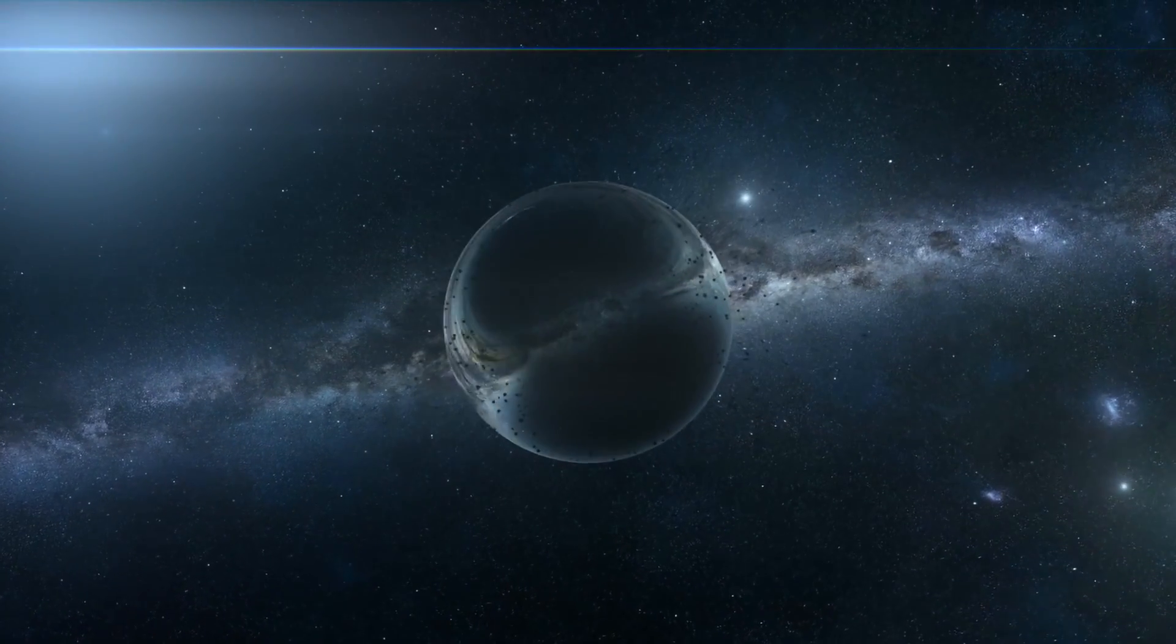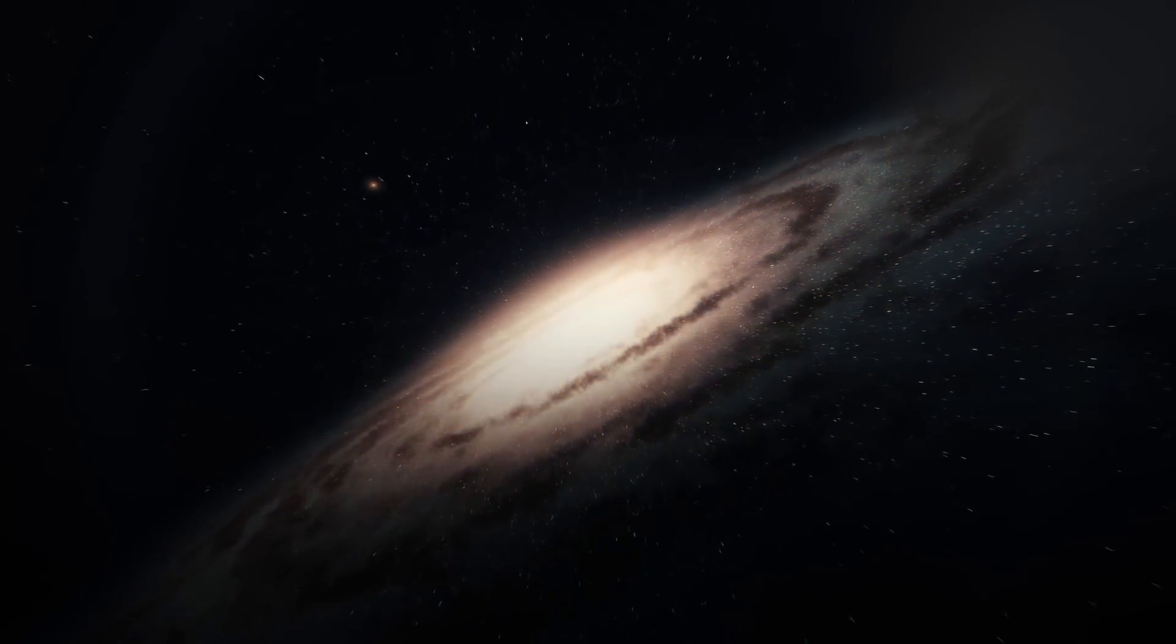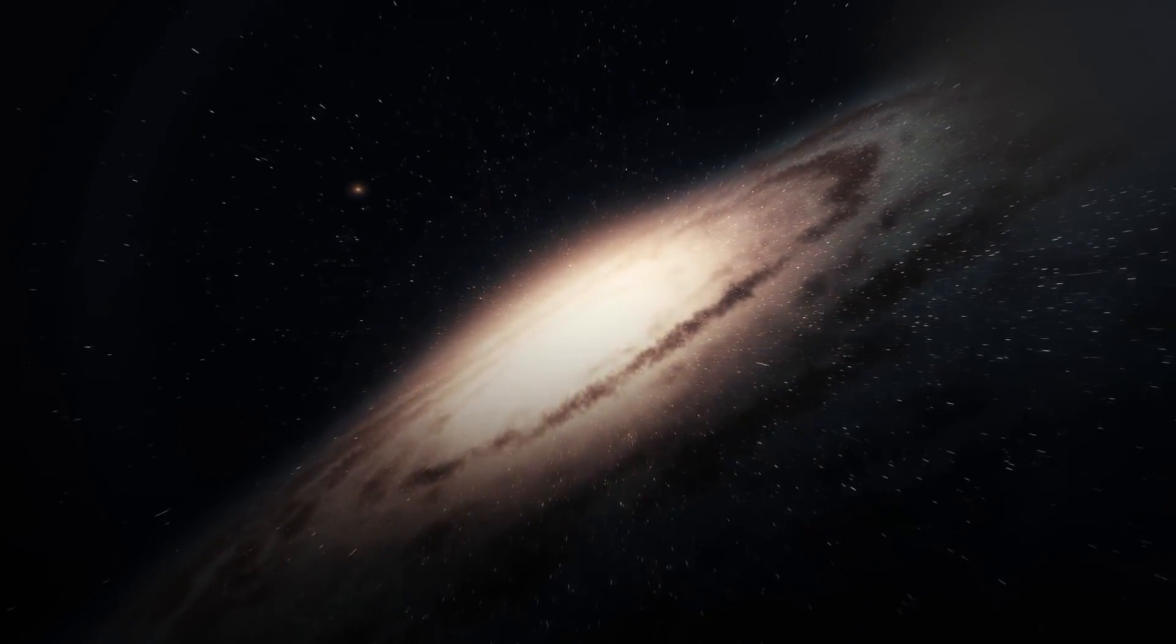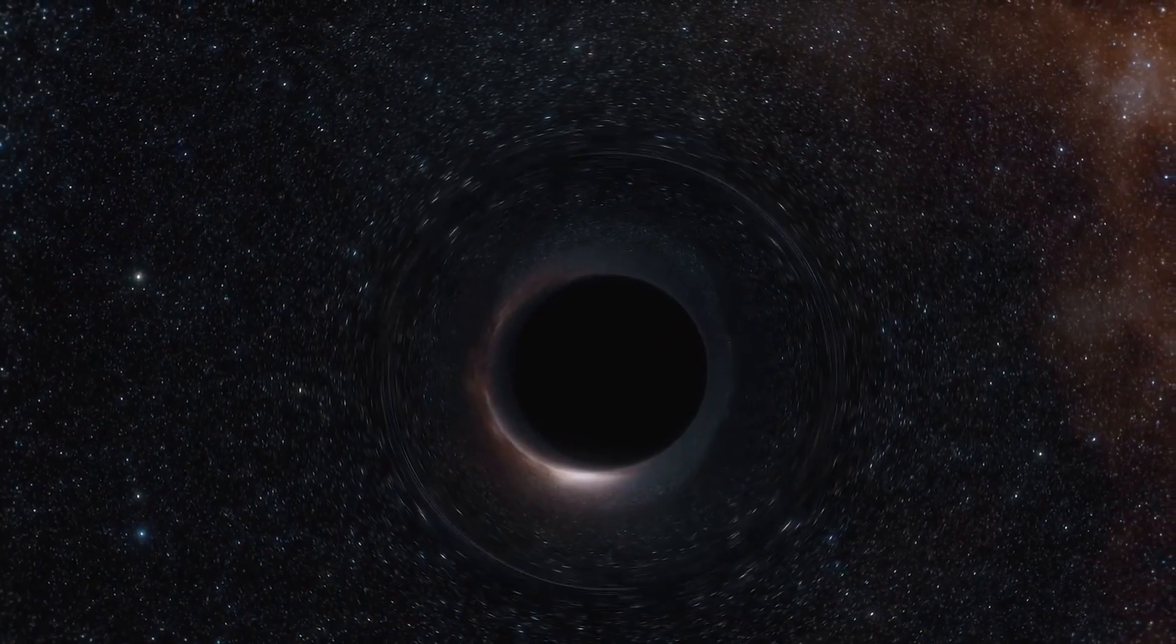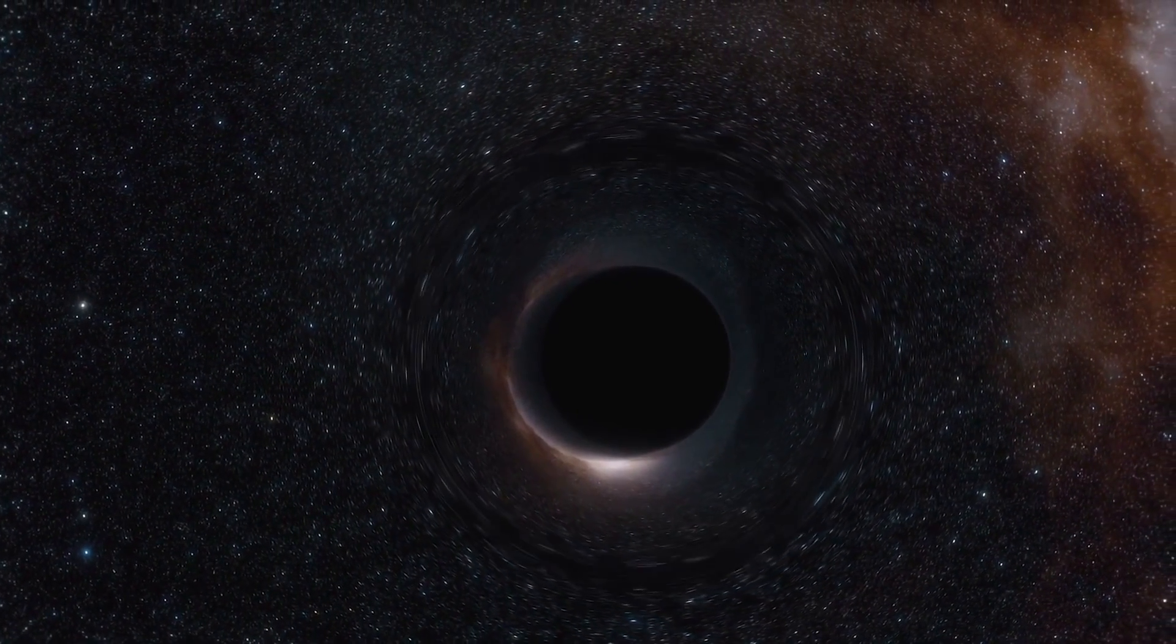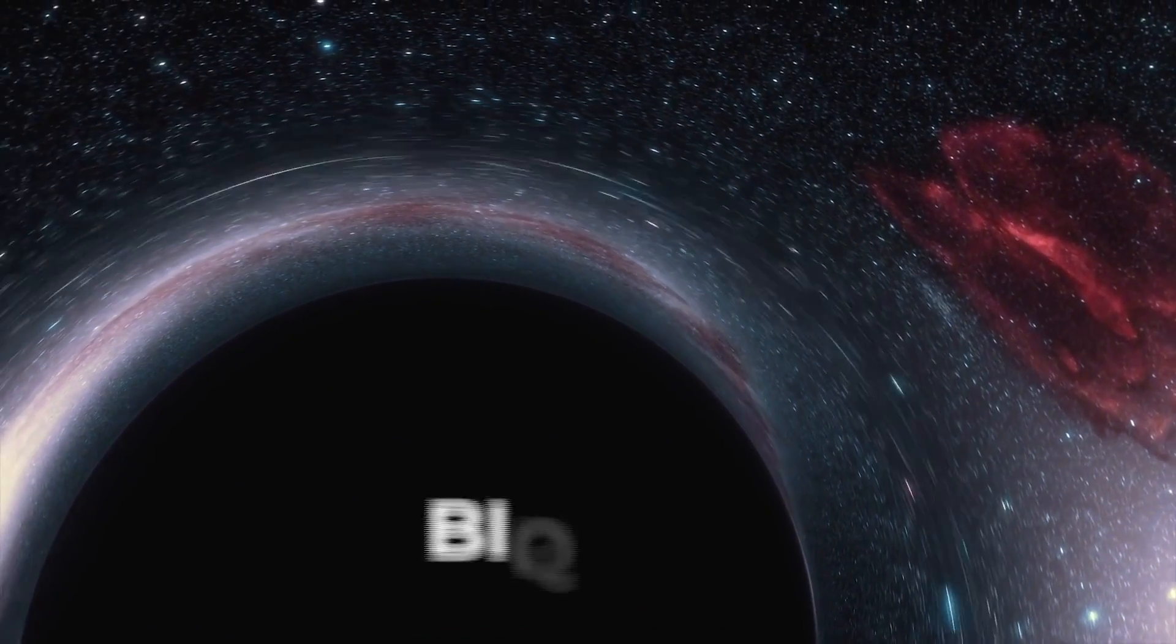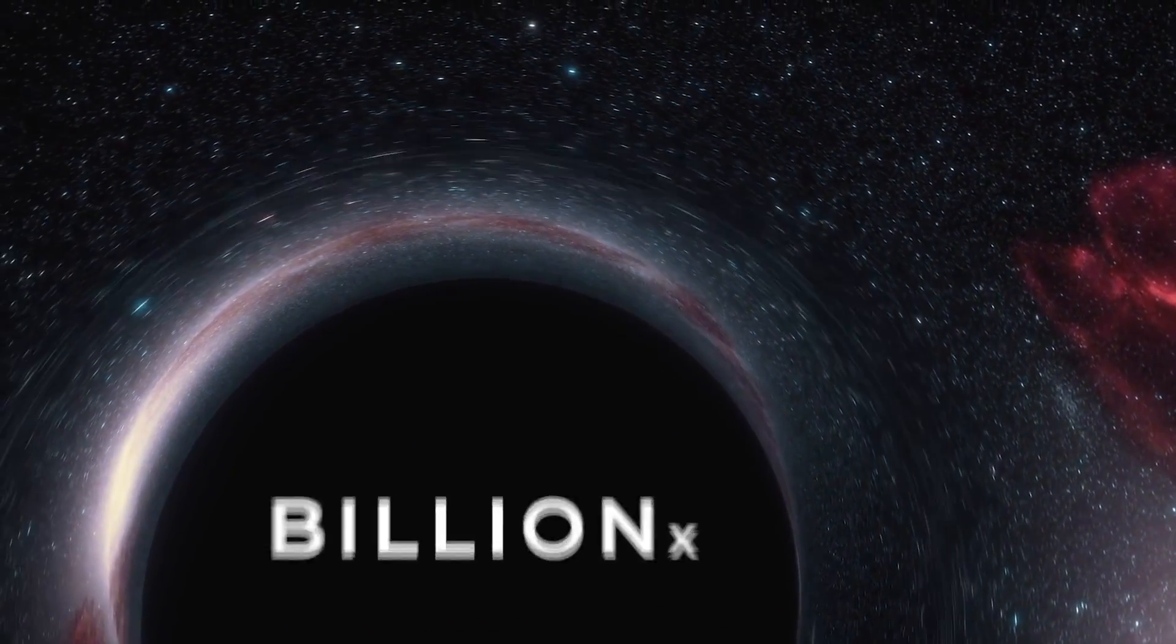Some of the largest black holes, called supermassive black holes, sit at the center of galaxies, keeping them held together. Black holes can range in size a lot, with the smaller ones measuring ten times the mass of our sun to the biggest ones measuring in at over a billion times the mass of our sun.